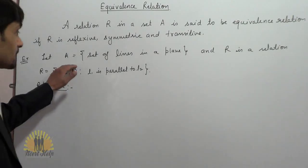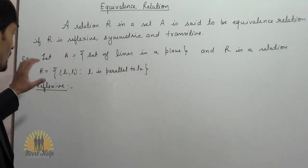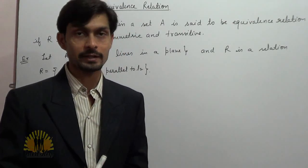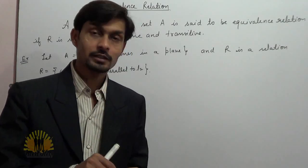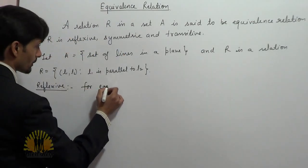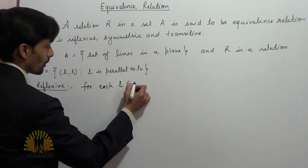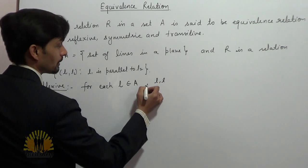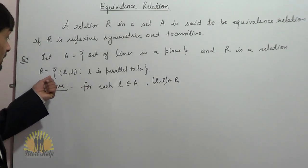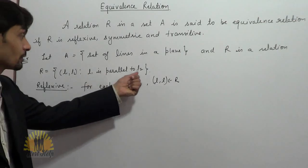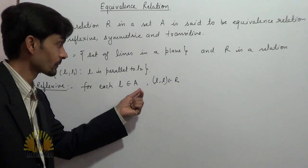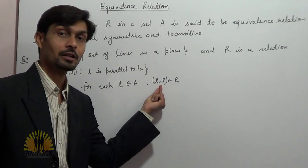Here, A is a set of all lines in a plane. For reflexive, we know that a relation is said to be reflexive if for each element which belongs to set A, it must relate to itself. So for each L belonging to A, (L,L) belongs to R. The relation says L1 is parallel to L2, and since every line is parallel to itself, any line L in set A satisfies (L,L) belonging to R.